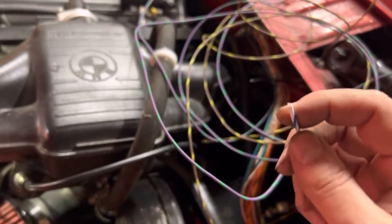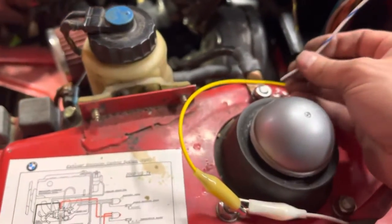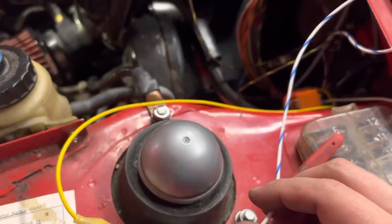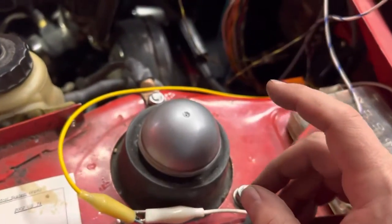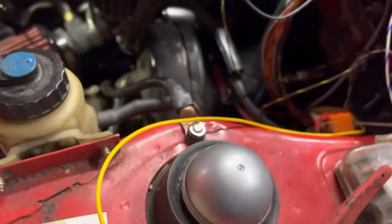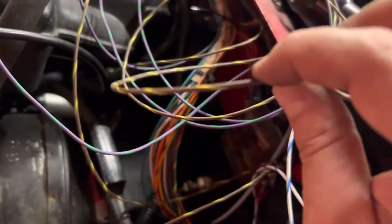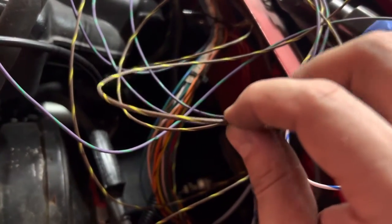Then we have the relay for the thermo fan, and this is grounded, so if I simply tap that to ground it should turn on the fan. We'll test that in a moment. And last but not least, I have right here the ground that actually runs from the ground rail to the ECU.